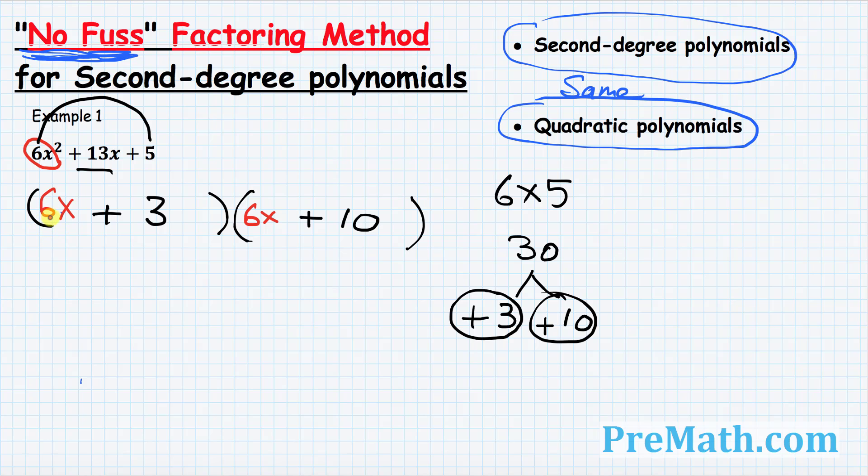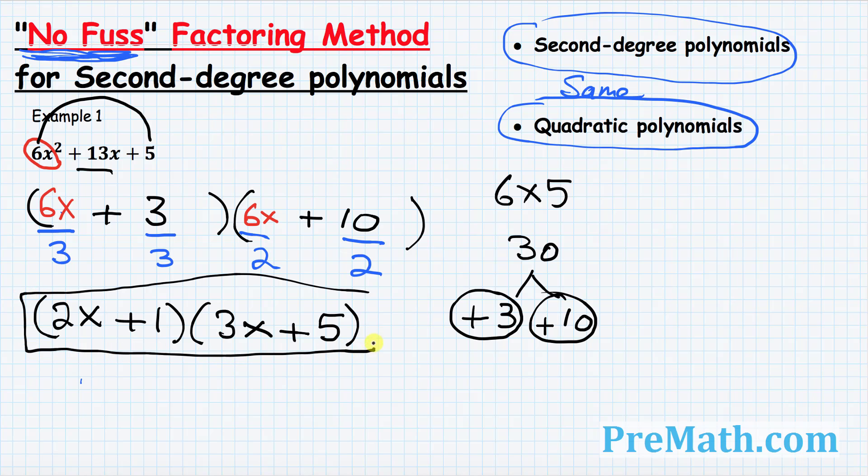And very last step, look at in the first parenthesis, we have numbers 6 and 3. These both numbers are divisible by 3 at the same time. And look at in the second parenthesis, 6 and 10 are divisible by 2 at the same time. So once we divide by these numbers, our complete factors are going to become 2x plus 1 times 3x plus 5. And these are our factors for our given example. And this is our complete answer.